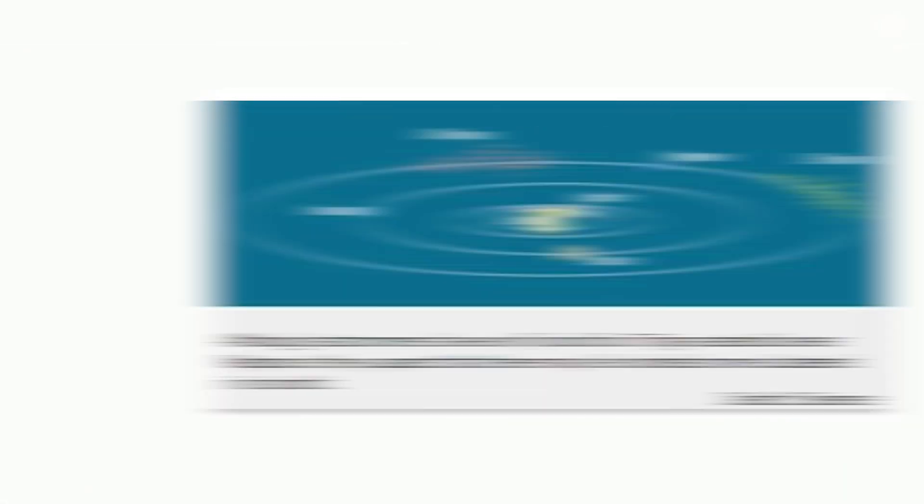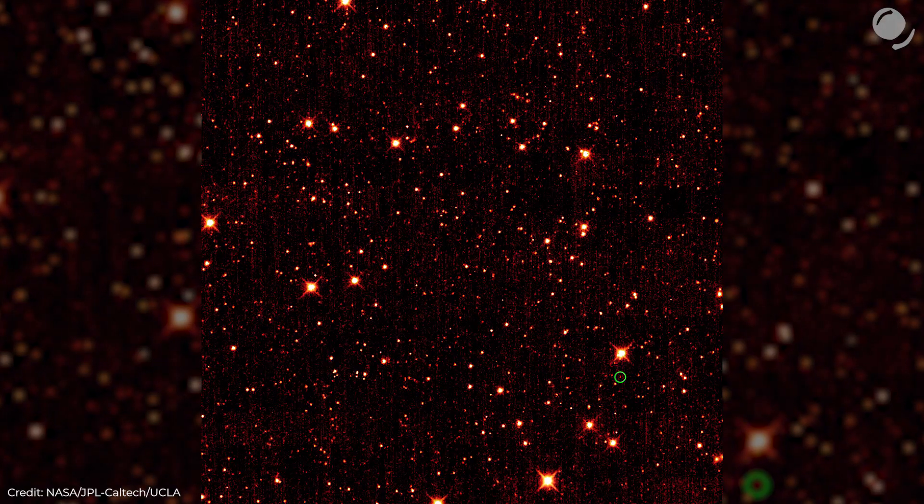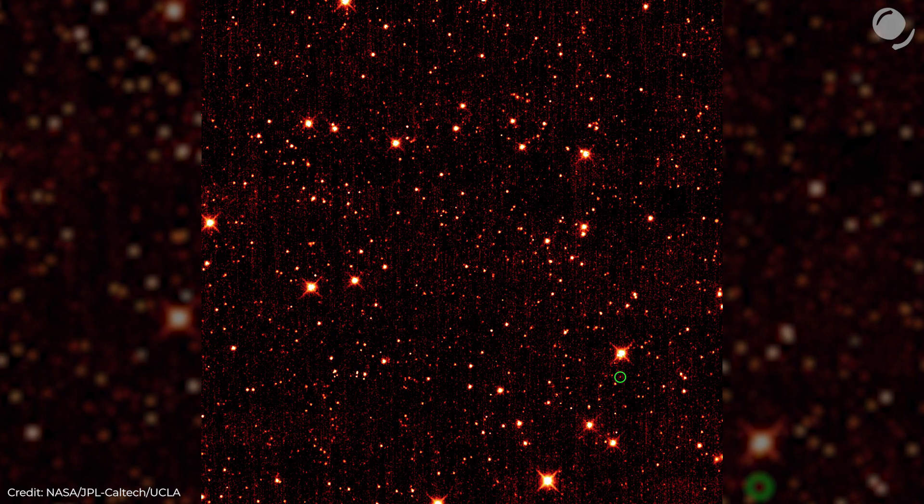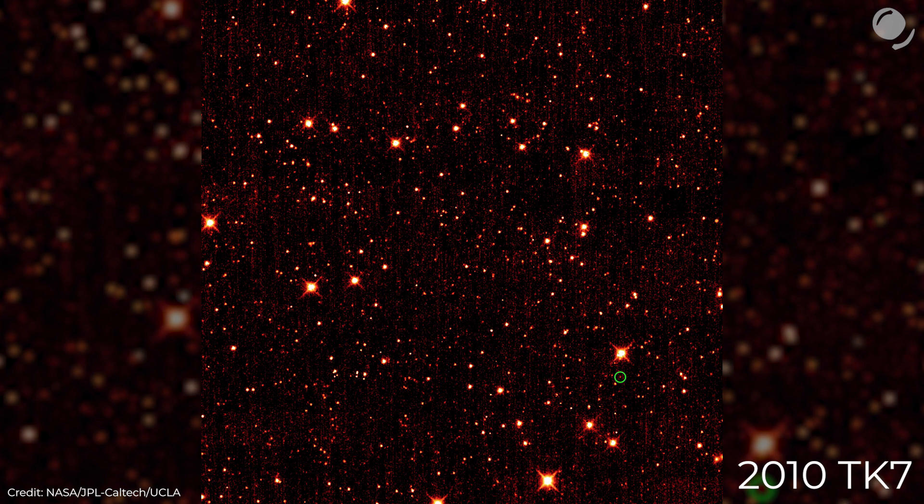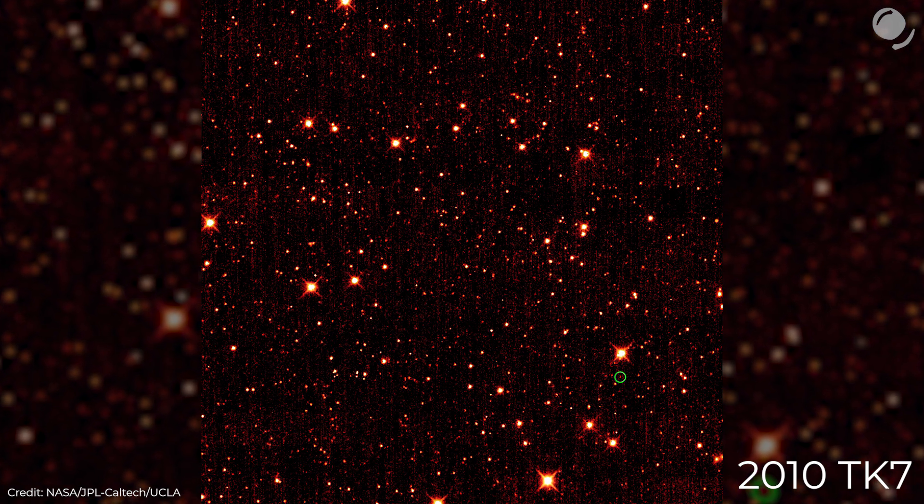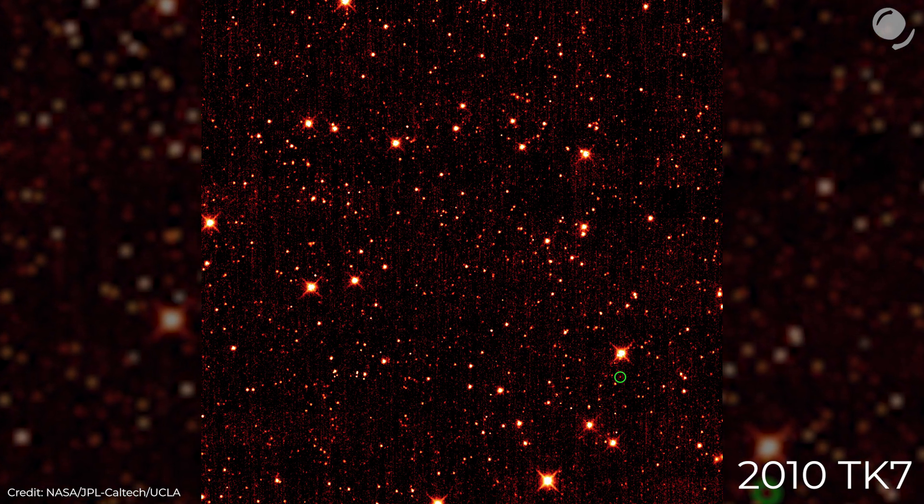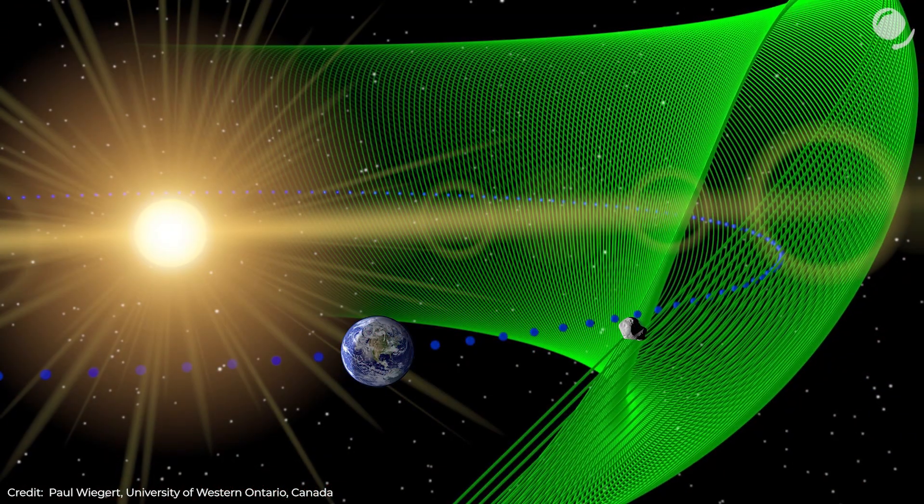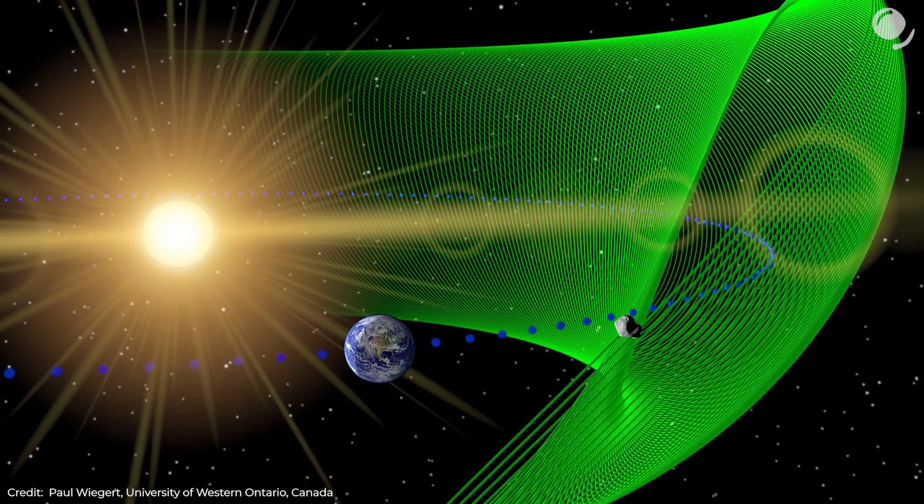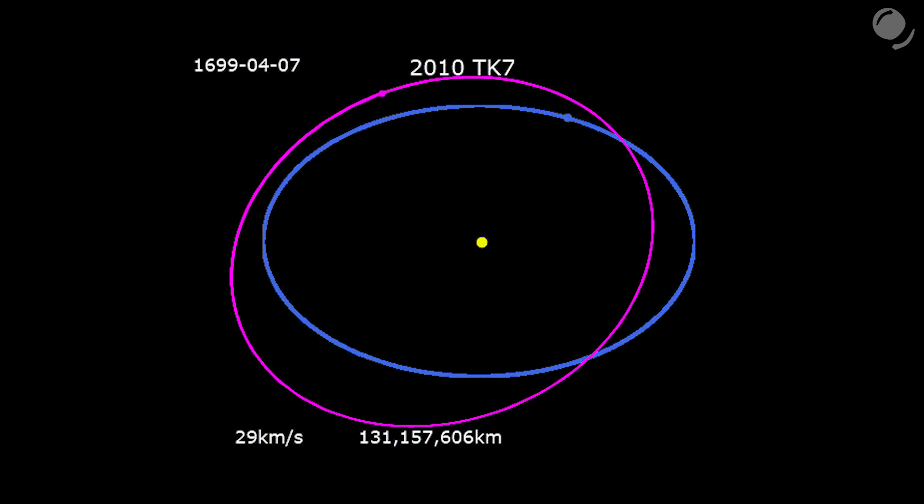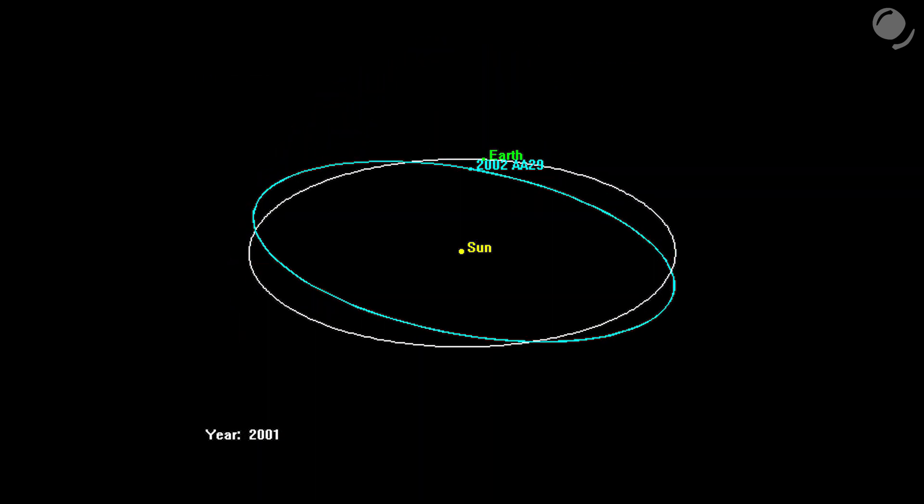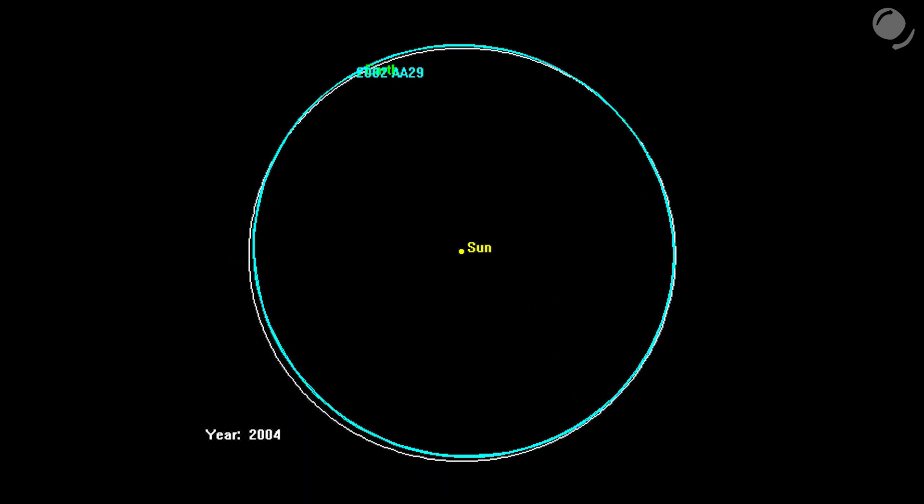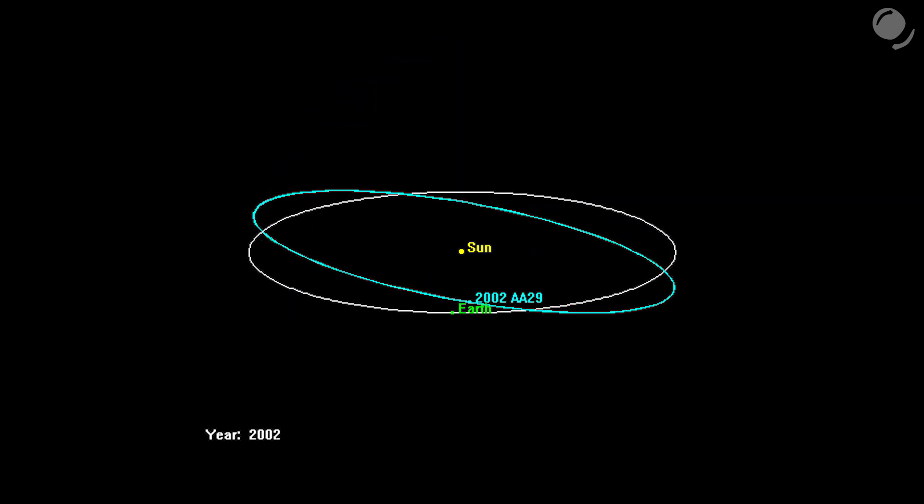Jupiter is not the only planet that has trojan asteroids. Mars got them, as well as Uranus and Neptune. And what about the Earth? A dim object in a green circle is a 300-meter asteroid 2010 TK7. It's the only known Earth's trojan asteroid. It's located near L4 point. The asteroid's movement is quite complicated. And this is its orbit around the sun. And that is another asteroid 2002 AA29 that orbits the sun very close to the Earth. But it's not a trojan asteroid.